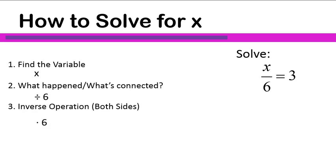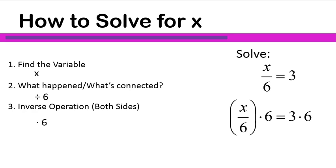The inverse of dividing by 6 will be multiplying times 6. So we're going to multiply times 6 on both sides of this equation. I'll put parentheses in there sometimes just to make it look a little more clear. We're taking x divided by 6 and multiplying that times 6. Those are inverse operations, so they undo each other, leaving us with x by itself on the left side. 3 times 6 is 18, and that's what we're left with on the right side. That's how we solve equations that have x in the numerator and a number in the denominator.